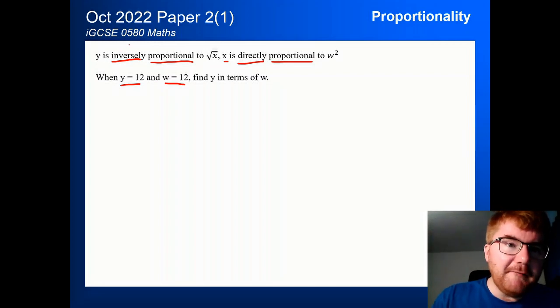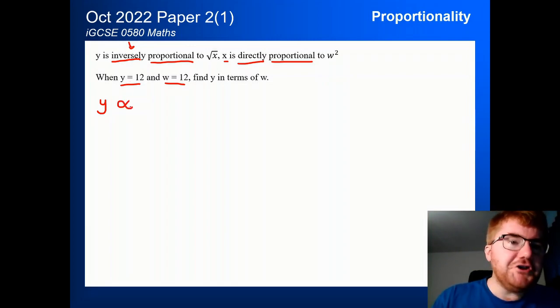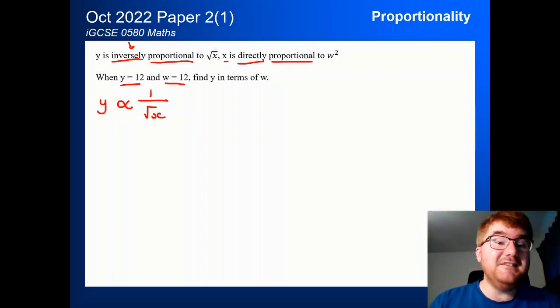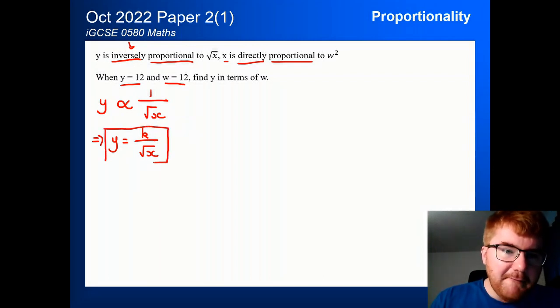So let's start with the first statement here. So y is inversely proportional. So remember, we use our fish symbol like so. And because it's inversely proportional, we write it as a fraction. So 1 over root of x. Then we turn that into an equation. So therefore, y is equal to some constant k over root x. So I'm going to leave that for the moment. I am going to come back to that. That's going to be the first equation.